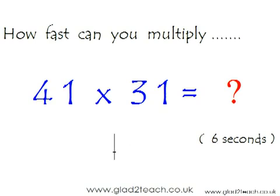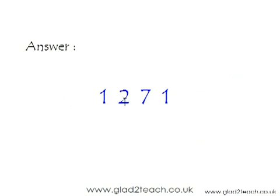Your time is up. The correct answer would be 4 times 3 is 12, and 4 plus 3 is 7, and 1. The correct answer would be 1271. There it is, one thousand two hundred and seventy-one.